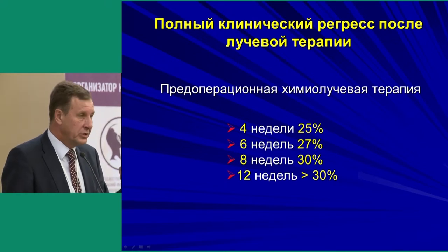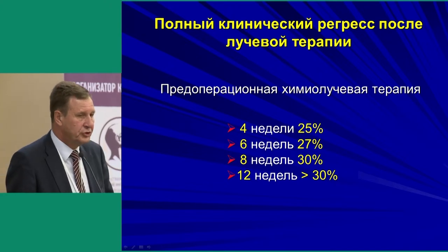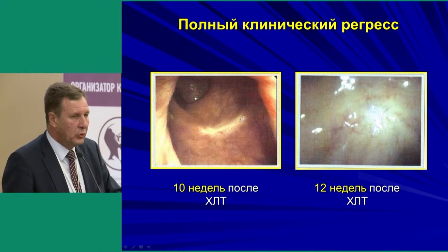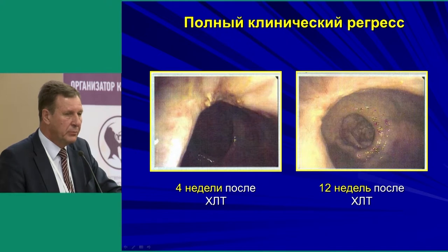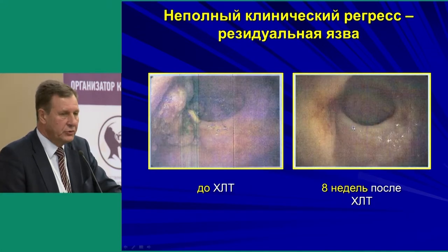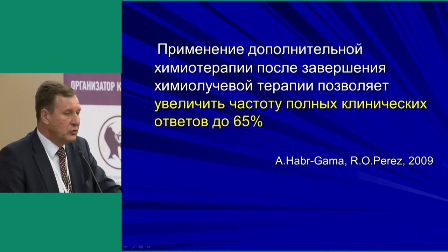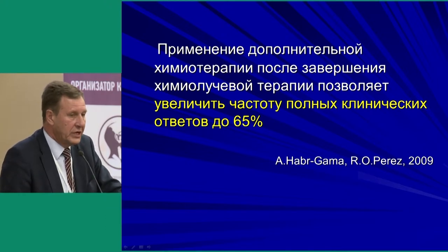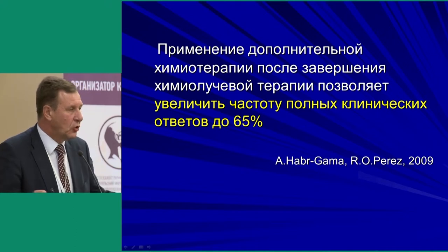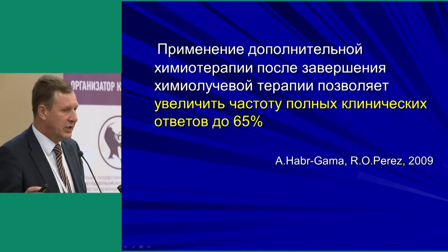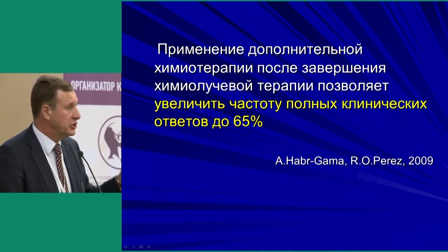On endoscopy, we see complete clinical regression 10–12 weeks post chemo-radiation. At 4 weeks post chemo-radiation there is still clear ulceration, but at 12 weeks the mucosa is white and clean. For incomplete regression we still see a residual ulcer at 8 weeks. Habr-Gama, the founder of this method, recommends using additional chemotherapy during the waiting interval between chemo-radiation and assessment — not just waiting 6, 8, or 12 weeks passively, but administering chemotherapy in that time.